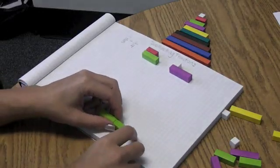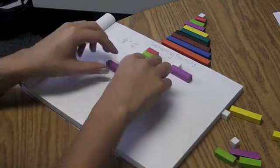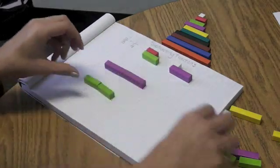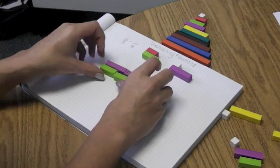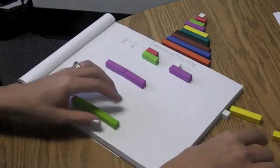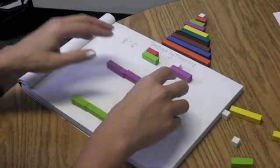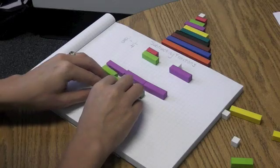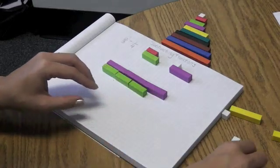So then my next strategy is then to take two purples and see if I can build it using my light greens. And again, that's not working. So I'm simply going to add another purple and see if I can make them the same that way.